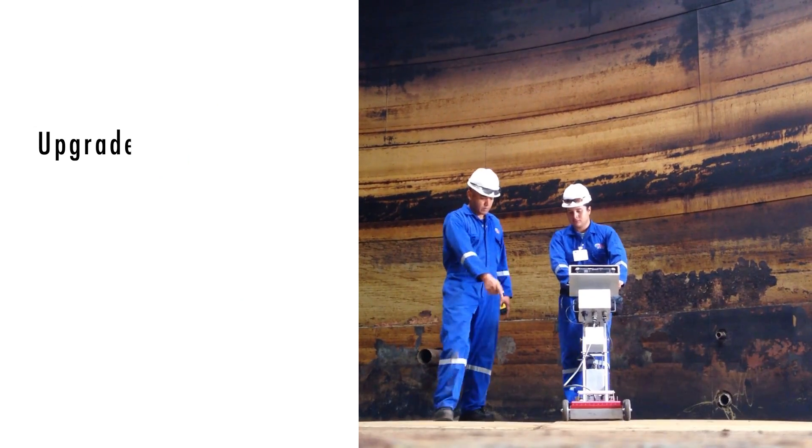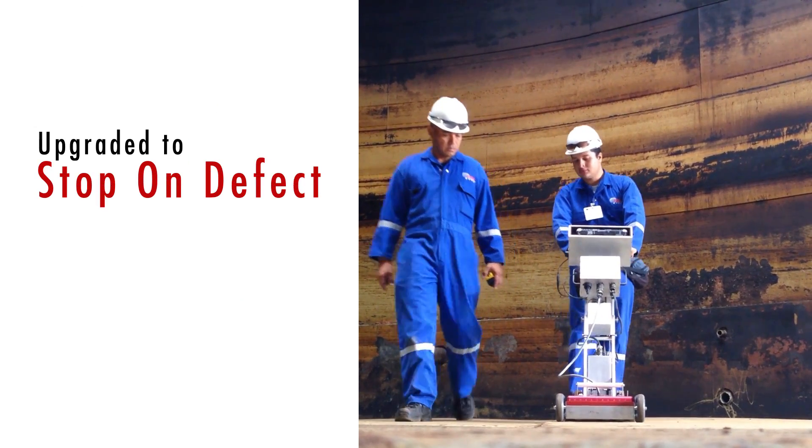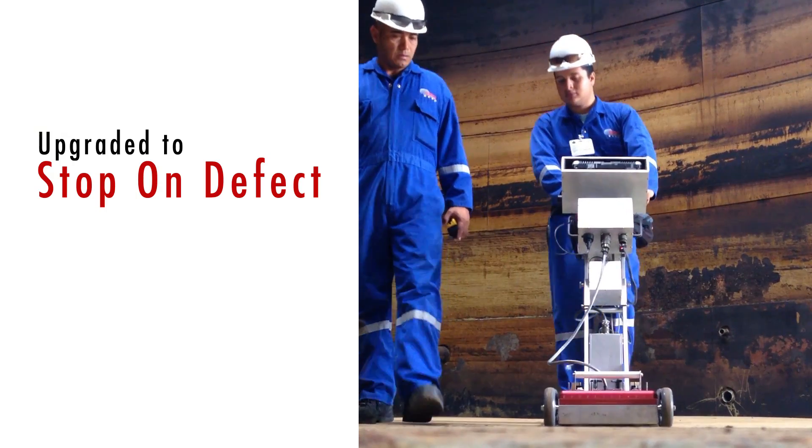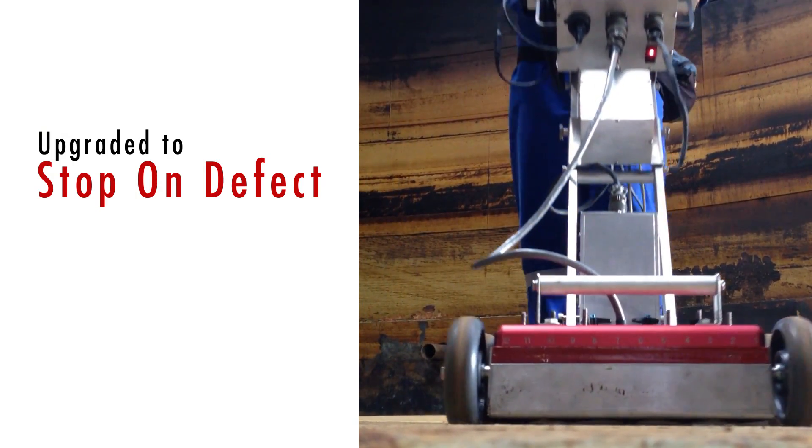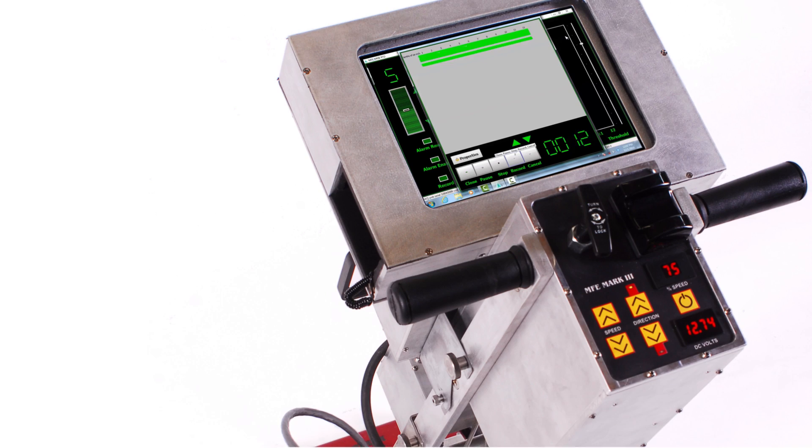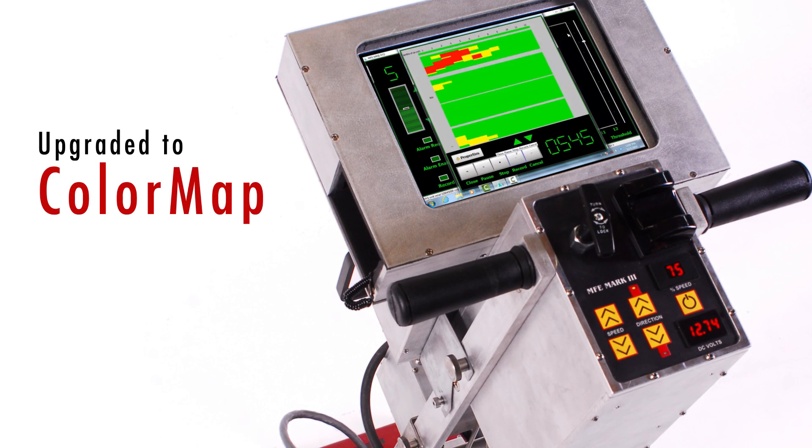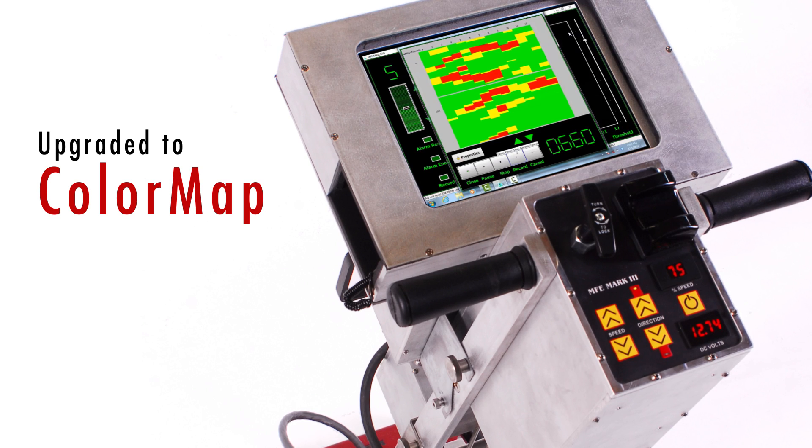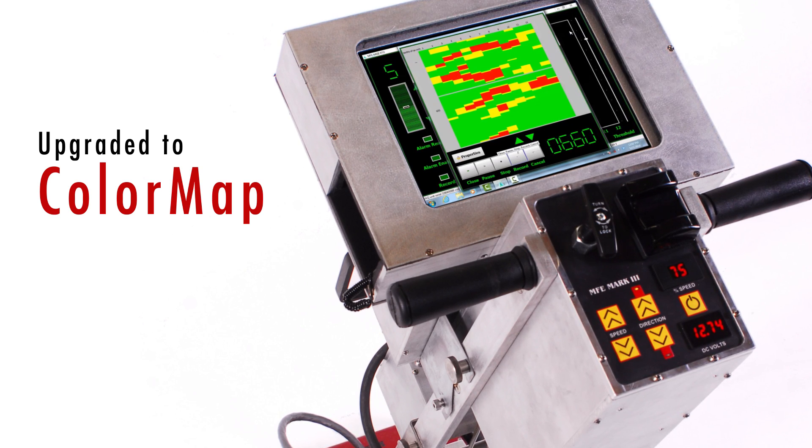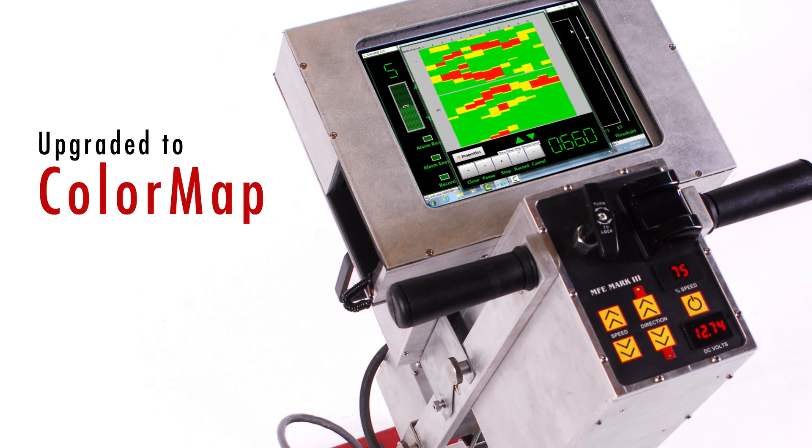The Mark III can be upgraded to the stop-on-defect model that uses a motor to drive the unit across the tank floor and shuts off the motor when a defect is discovered. The Mark III can be upgraded to the color map system that allows operators to create color-coded maps of the scanned areas, giving a complete picture of your tank or pipeline integrity.